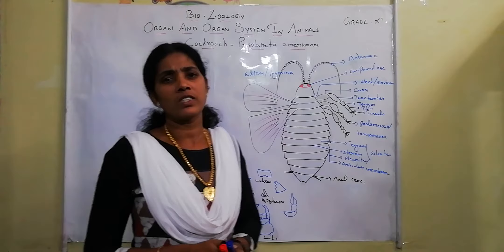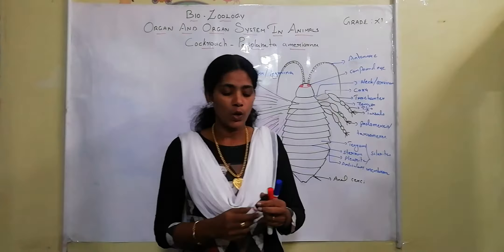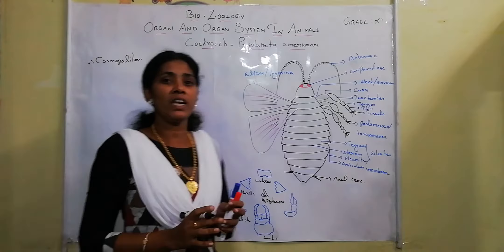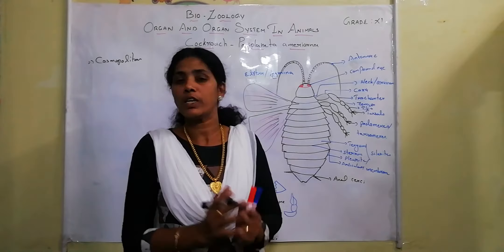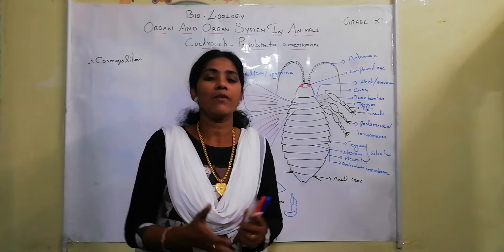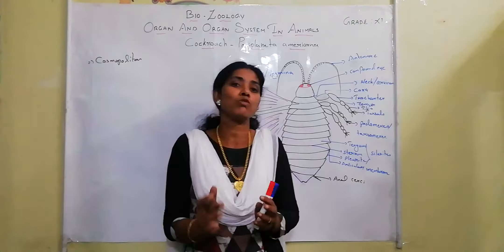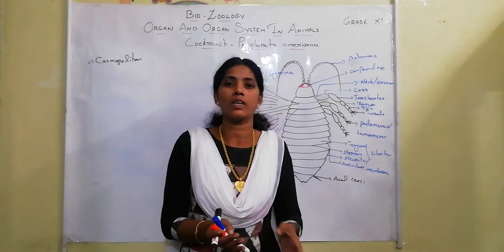Let us discuss its general features. Periplaneta is cosmopolitan in nature, which means it is available everywhere, in every country. It is omnivorous in habit, meaning it can eat every kind of food. The body is covered by a chitinous exoskeleton.